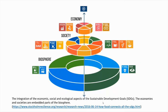The 17 Sustainable Development Goals integrate economic, social and ecological aspects. The goals related to biosphere are life on land, life below water, clean water and sanitation, and climate action. The goals related to society include no poverty, sustainable cities and communities, peace, justice and strong institutions, affordable and clean energy, good health and well-being, quality education, gender equality, and zero hunger. The goals related to economy are decent work and economic growth, industry innovation and infrastructure, reduced inequalities, and responsible consumption and production. The economies and societies are embedded parts of the biosphere.